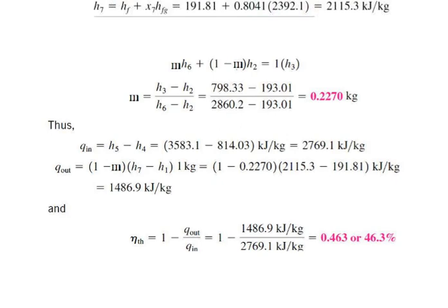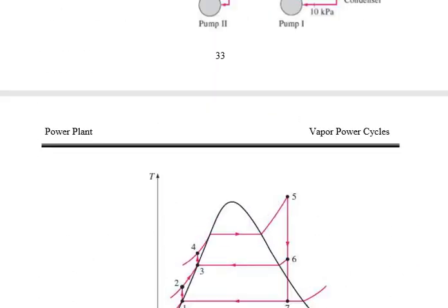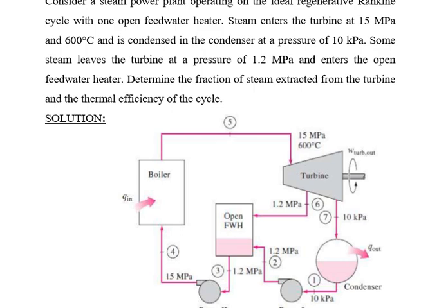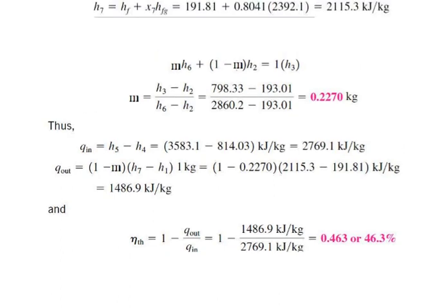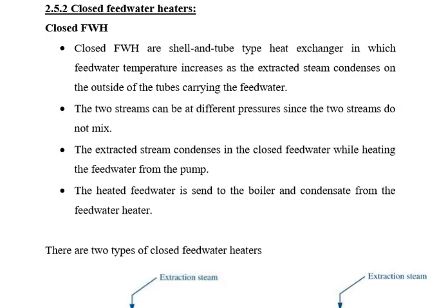Now we take another numerical based on the reheat cycle. Consider a steam power plant operating on the ideal reheat Rankine cycle. Steam enters the high-pressure turbine at 15 MPa and 600°C and is condensed in the condenser at a pressure of 10 kPa. The moisture content of the steam at the exit of the low-pressure turbine must not exceed 10.4%. Determine: (1) the pressure at which the steam should be reheated, and (2) the thermal efficiency of the cycle. Assume steam is reheated to the inlet temperature of the high-pressure turbine.